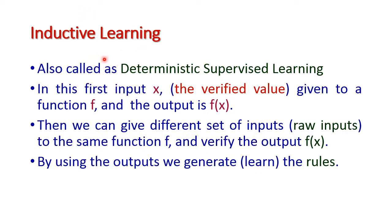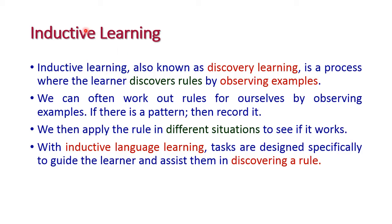First we should understand what is inductive learning. It is otherwise called as deterministic supervised learning. In supervised learning, the input is verified and error-free, which is given to a function f, then the output will be f(x). After that we can give another set of inputs which are not verified — raw inputs — to the same function f, and then verify the output f(x). By using all the f(x) outputs we should generate the rules. This is called inductive learning.